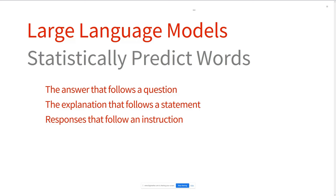But it turns out, as we've discovered in the last year as these things have emerged into the mainstream, that prediction can be incredibly good. It's so good at using both short-range and long-range context to find that next predicted word, that the words it predicts often form the answer to a question, or an explanation, or it seems capable of following instructions. You get this emergent behavior that appears to be intelligence. But it's worth remembering that in the end it's guessing words using probabilities, because that does affect what it really can deep down do and what it can't.